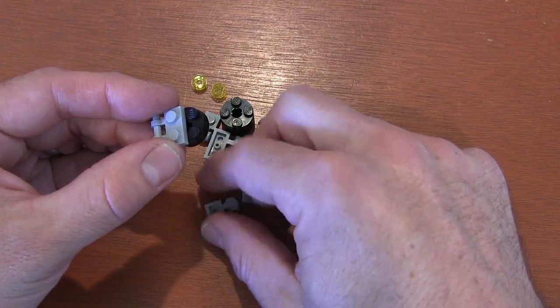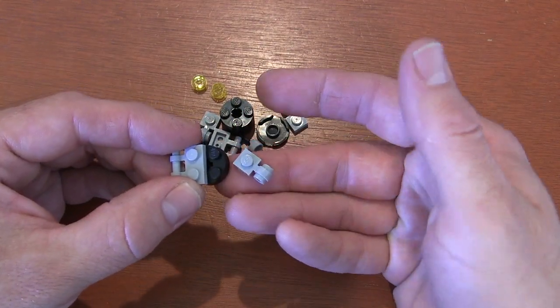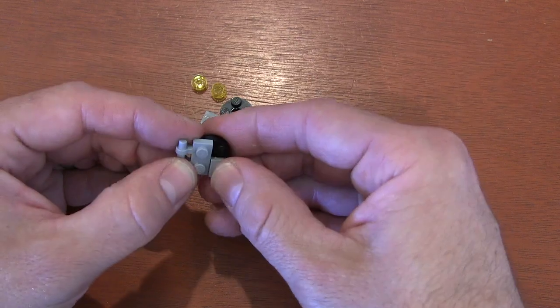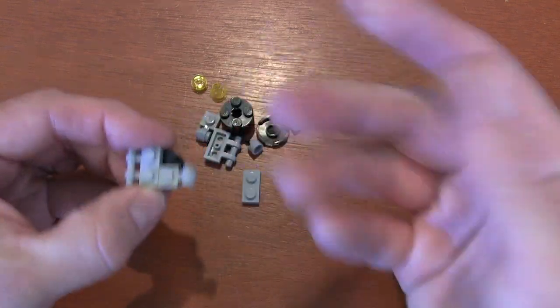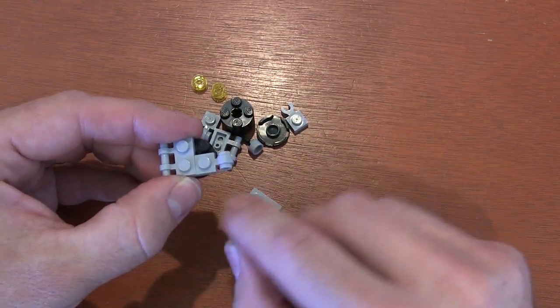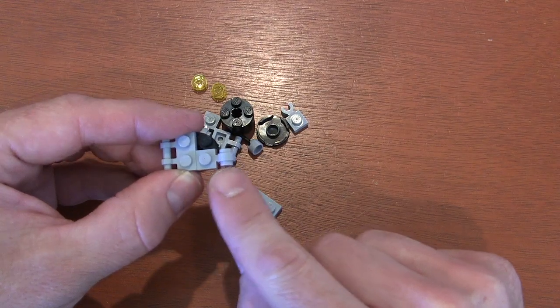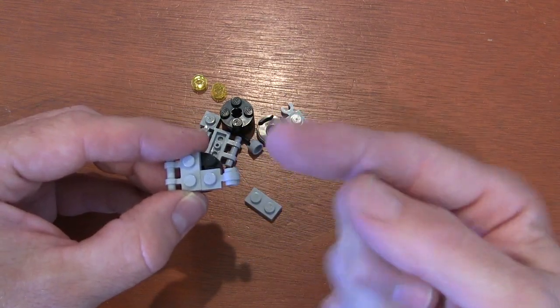And on the other side, we're going to get a 1x1 plate with ring clip on side. Now, this next piece is interesting. I couldn't find it. Technically, it should be like a 1x1 plate with ring clip, but just kind of facing up instead of to the side.